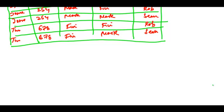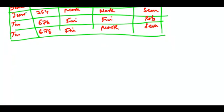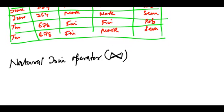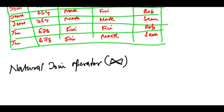We will take a look at the natural join operator. The natural join operator is denoted by this symbol - it's like two triangles coming together at their vertices.